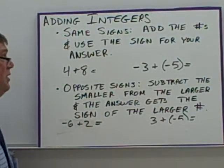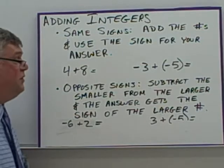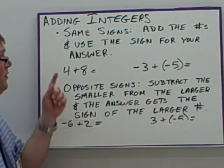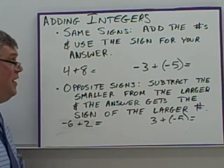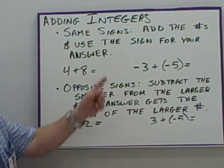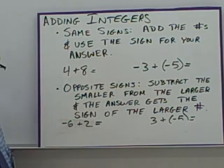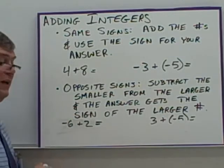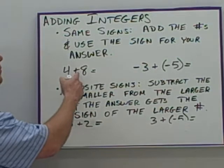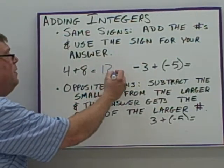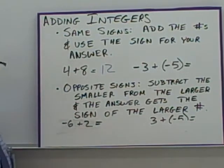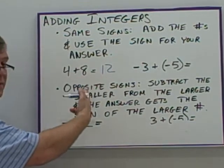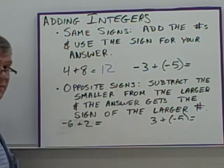Adding integers. When adding integers, the rule is: if you have the same signs for the numbers you're adding, then you add the numbers and use that sign for your answer. Here I have two positive numbers — pretty straightforward. 4 plus 8 is 12. My answer is going to be positive. Both numbers were positive, so the answer is positive.